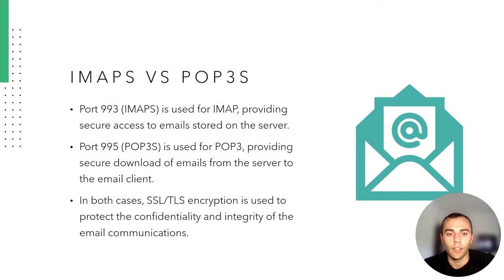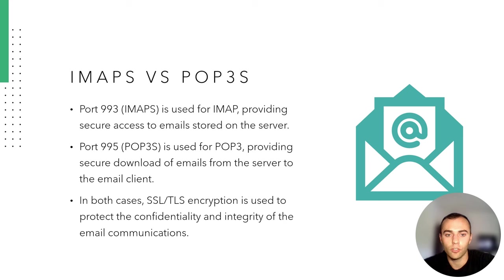A brief comparison between IMAPs and POP3S: port 993, IMAPs, is used for IMAP, providing secure access to emails stored on a server. That is compared to port 995, POP3S, which is used by POP3 to provide secure download of emails from the server to the email client. So while one provides secure access to emails stored on the server, the other — POP3 — provides secure download of emails from the server to the email client. In both cases, SSL or TLS encryption is used to protect the confidentiality and integrity of the email communications.